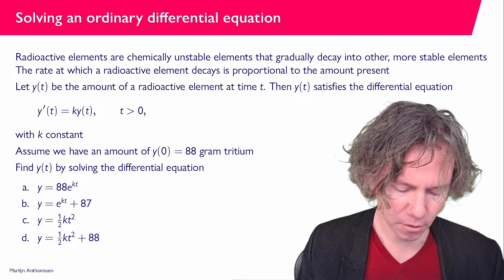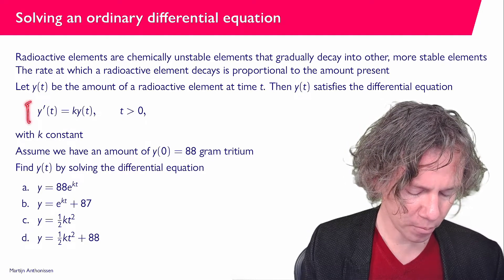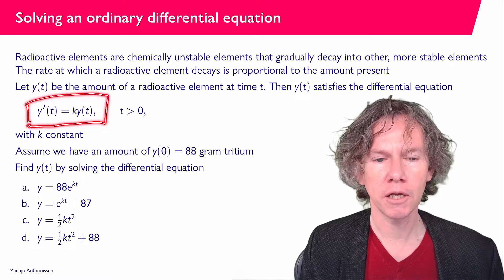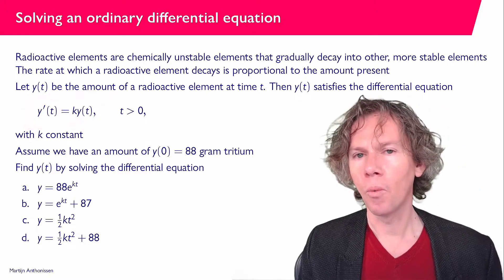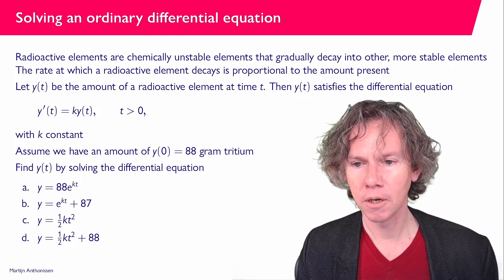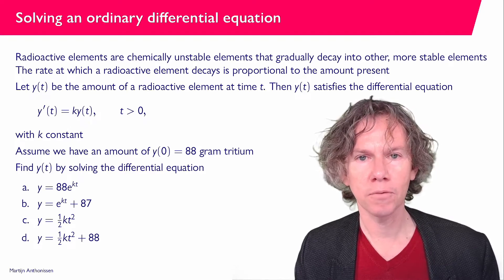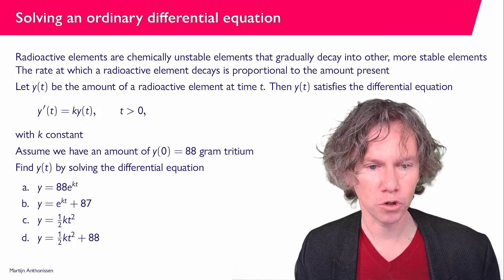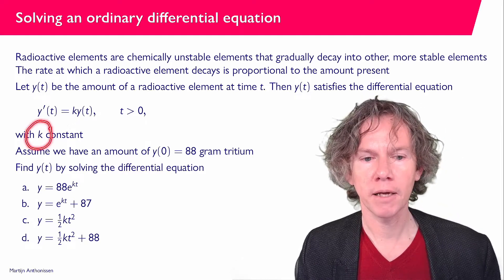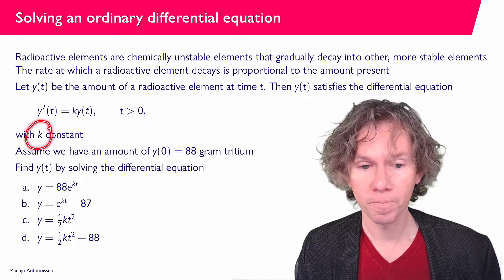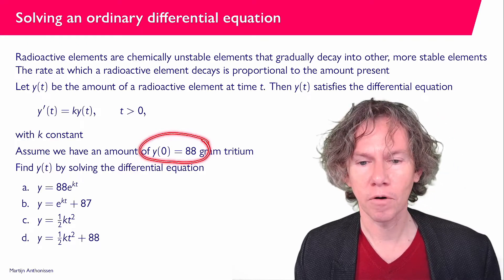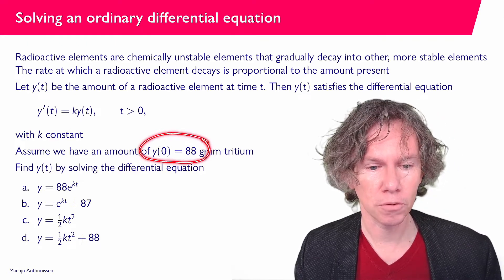It is being said here that this process is described by the differential equation y'(t) = k·y(t). y(t) is the amount of the radioactive element we have at time t, and this tells you how this will behave as a function of time. k is a constant that indicates how fast y(t) will disappear, and we have y(0) = 88 grams of tritium, which is the material we are considering here.